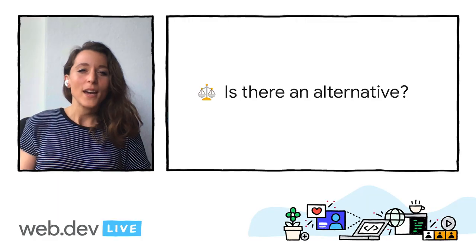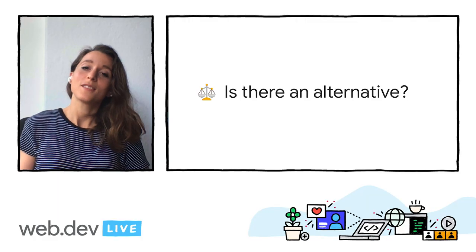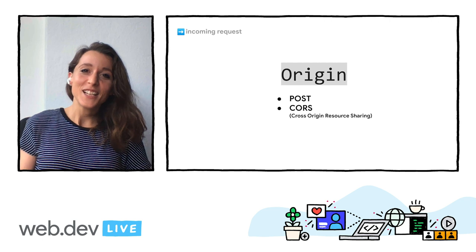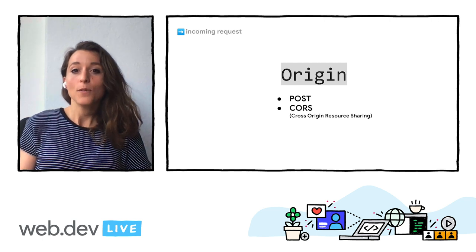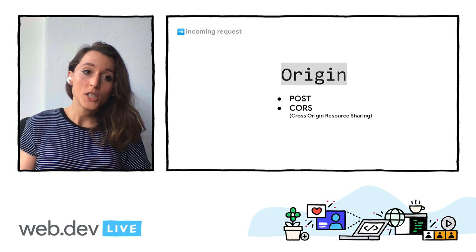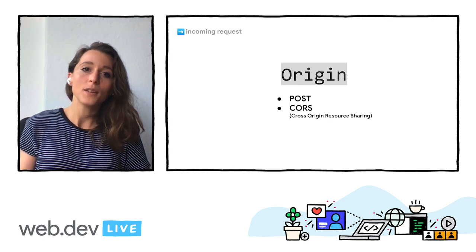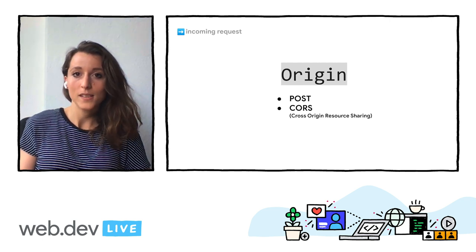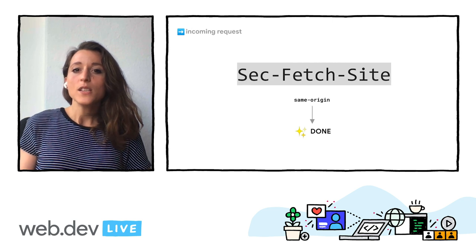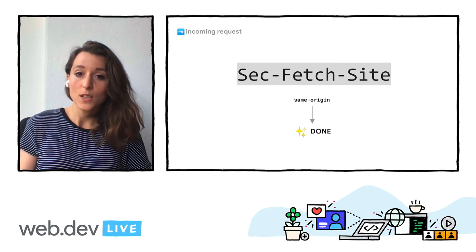We'll see how. Onto question two: is there an alternative? Yes. First, incoming requests. If what you need is just the origin, the origin header gives you exactly this, and it's available in POST and CORS requests. And if what you need to know is whether the request is same origin, you can use the sec-fetch-site header. Also, if you're using the referrer as an extra protection against CSRF, then replacing it with this or origin is great. But make sure that you're using CSRF tokens and maybe SameSite as a primary protection.